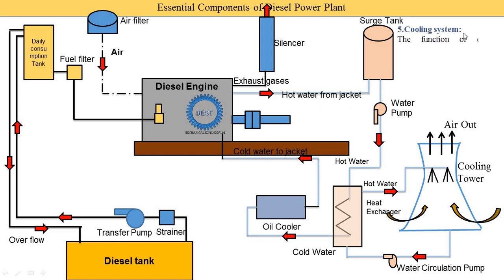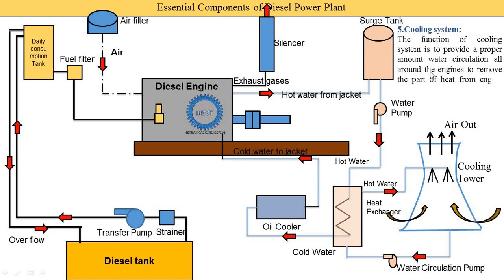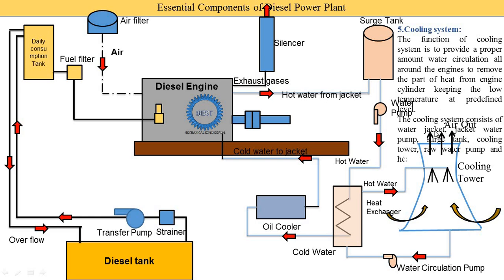The function of the cooling system is to provide proper water circulation around the engine to remove heat from the engine cylinders and keep temperatures at predefined levels. The cooling system consists of the water jacket surrounding the cylinders, the jacket water pump, the surge tank, the cooling tower, the raw water pump, and the heat exchanger.